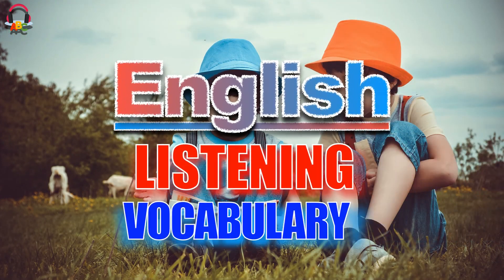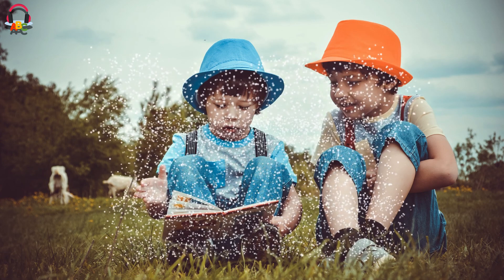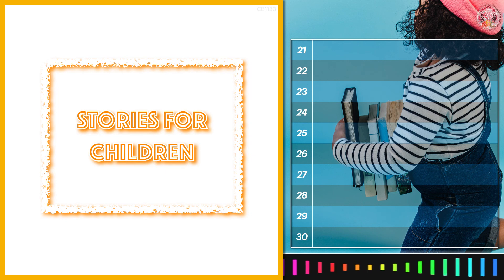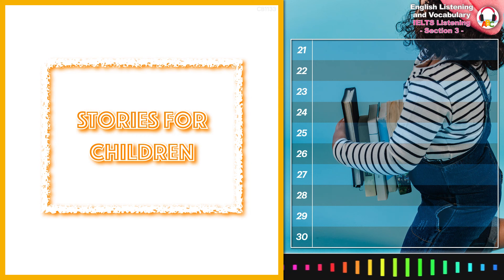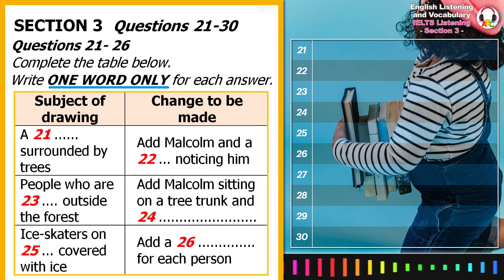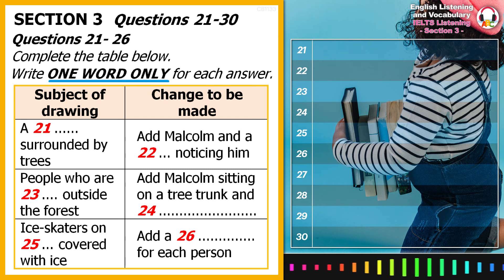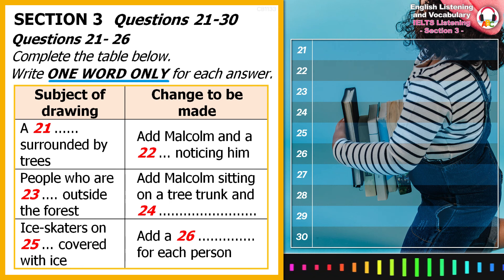Welcome to English Listening and Vocabulary, Section 3. You will hear two students called Helen and Jeremy who are studying creative writing discussing a project for their course, which involves writing and illustrating stories for children. First, you have some time to look at questions 21 to 26. Now listen carefully and answer questions 21 to 26.